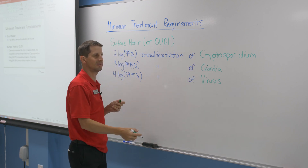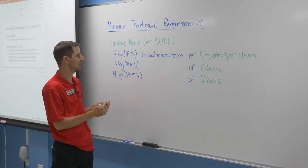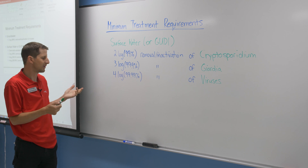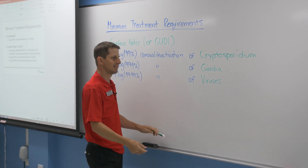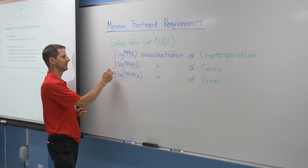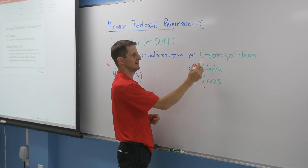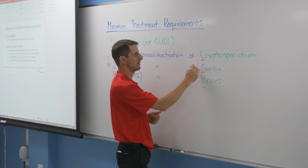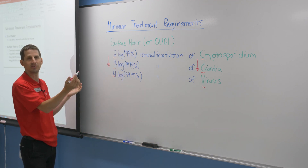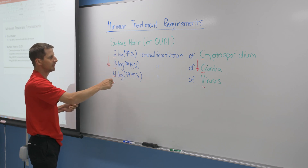We treat the big stuff, we treat the little stuff, and automatically in between we're going to kill the bacteria, which are kind of in between those two sizes. The easiest way to remember which is which is to look at the letters of the alphabet and numbers. Count one, two, three — the numbers are getting bigger. Same thing with the letters: C, G, V. C comes before G, comes before V in the alphabet — they get bigger. So you can always remember the minimum treatment requirements for surface water because it's two, three, four — CGV.